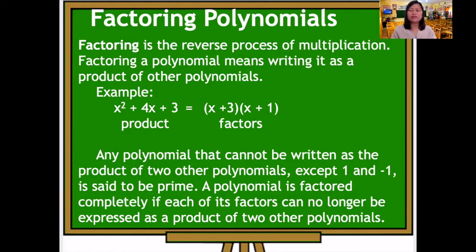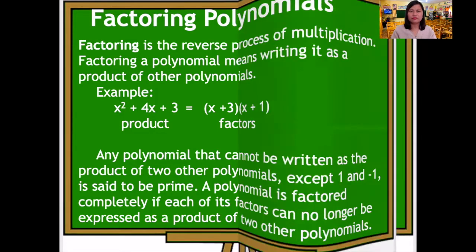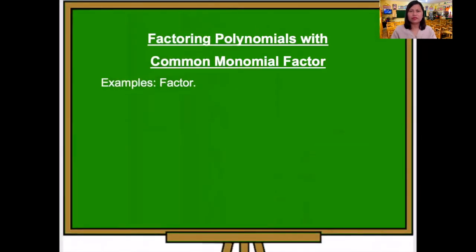A polynomial is factored completely if each of its factors can no longer be expressed as a product of two other polynomials. Let's have examples of factoring polynomials with common monomial factor.